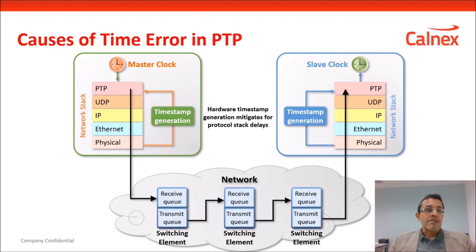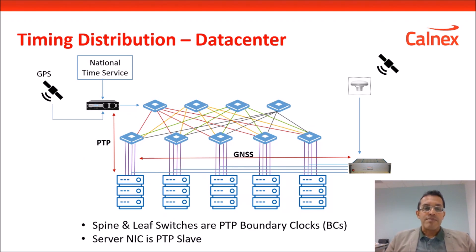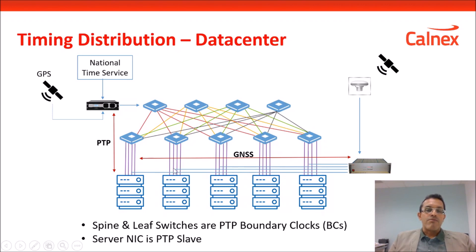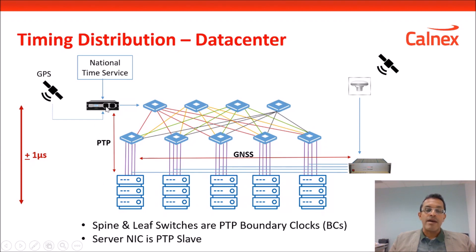What are the limits we need to measure to? That really depends on the application. In a data center, for example, you might have a national time service or GPS coming into a master clock, with spine and leaf switches acting as boundary clocks to transfer and recover the time. Network interface cards on server racks act as PTP slaves. Requirements range from tens of milliseconds in some applications to the more stringent requirement of plus or minus one microsecond maximum error between the Grandmaster and the network interface card. This one microsecond number is important: if you're designing equipment for that network, it must meet that limit.